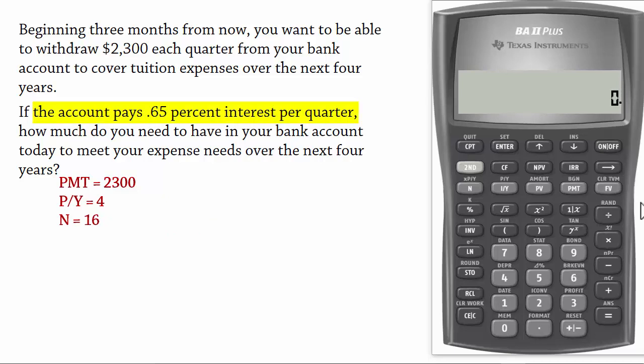The account pays 0.65% per quarter. Since 4 quarters make a year, this implies that the annual interest rate is 0.65% times 4 which gives 2.6%. That is I/Y equals 2.6. The account pays 0.65% per quarter also tells us that the interest is being compounded quarterly. That is C/Y equals 4.